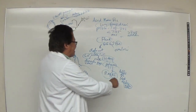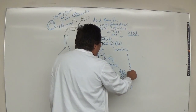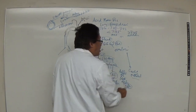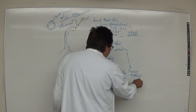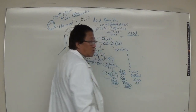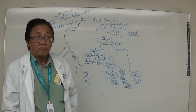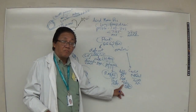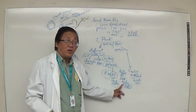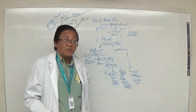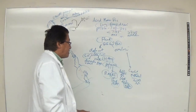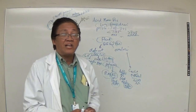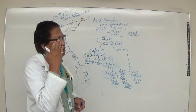In Cushing's disease, high aldosterone levels cause both water and sodium retention. Patients develop hypernatremia — sodium levels greater than 145 mEq/L. In Addison's disease, you cannot retain sodium, leading to hyponatremia — sodium less than 135 mEq/L.